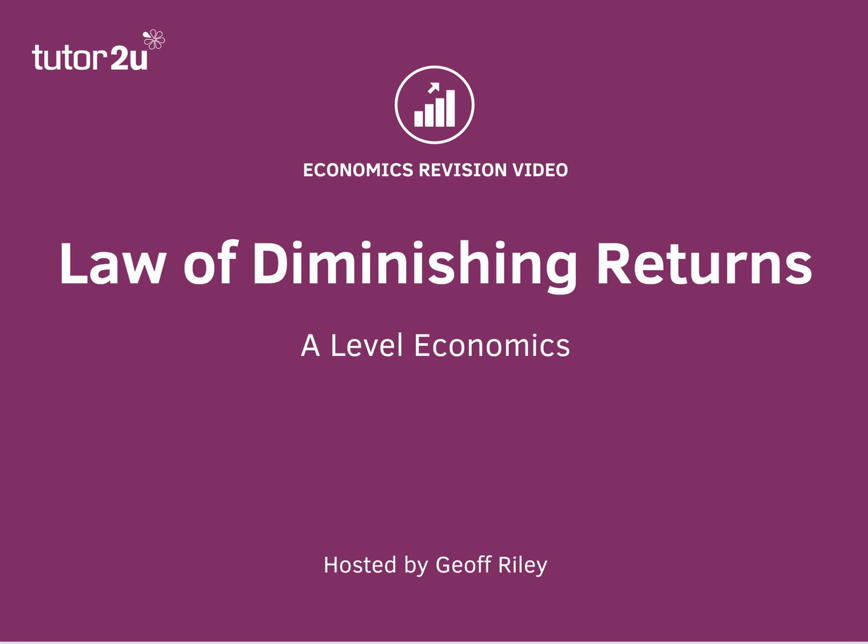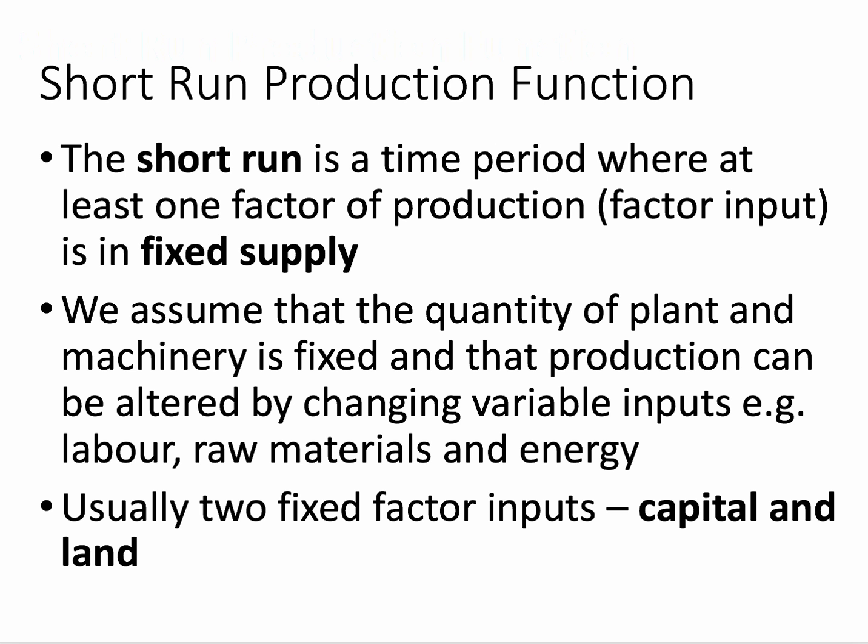The Law of Diminishing Returns refers to short run production, where at least one input of production — one input, normally land, could be capital — is fixed in supply. The only way we can increase output is by adding more units of a variable factor, for example labour and/or more materials and components to the production process.